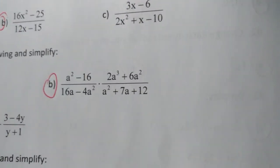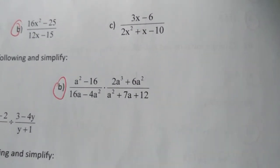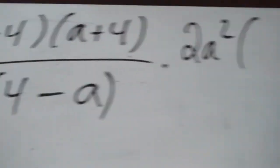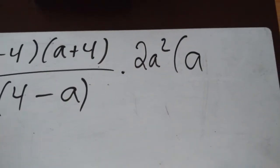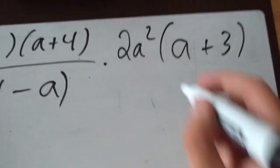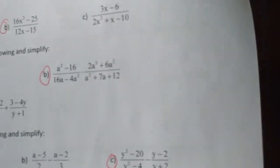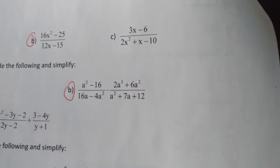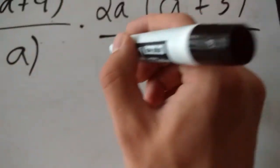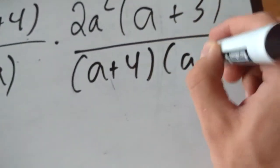Moving to the other fraction: on the top, we can factor out a 2a squared from both terms — 2a squared times (a plus 3), since 2a squared out of 2a cubed leaves a, and 2a squared out of 6a squared gives plus 3. As for the denominator, that's a classic trinomial with a sum of 7 and a product of 12, which factors as (a plus 4)(a plus 3).